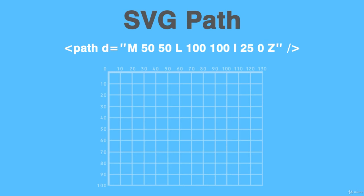The letter 'M' signifies the point at which we will put our pencil or pen. Imagine you have a pencil and a white piece of paper. When we say 'M 50 50', the first 50 is the x-axis value and the next 50 is the y value. We're saying: pick up the pencil and move it to x=50, y=50. We're not drawing anything yet — just positioning.